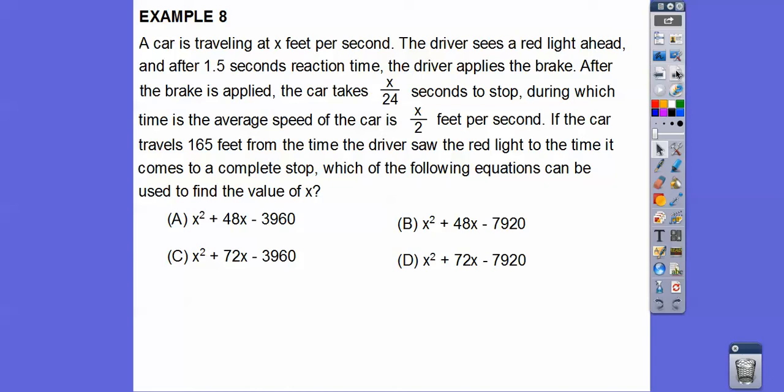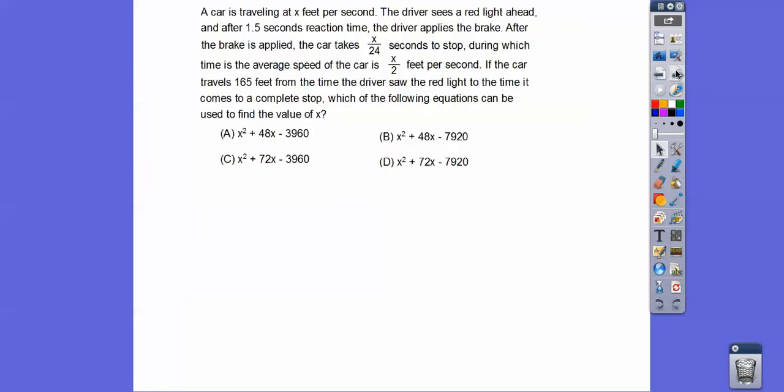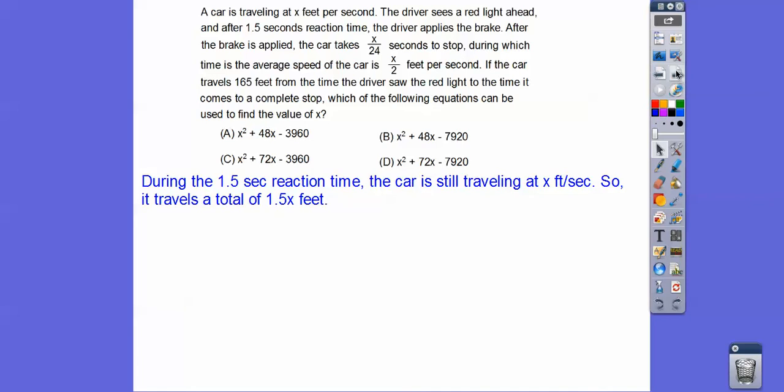Okay. All right. The car is traveling at x feet per second. The driver sees a red light. And after 1.5 seconds reaction time, he finally applies or she finally applies the brake. So after the brake is applied, the car takes x over 24 seconds to stop, during which time the average speed of the car is x over 2 feet per second. So a lot of stuff there. If the car travels 165 feet from the time the driver saw the red light to the time it comes to a complete stop, which of the following equations can be used? All right. I just shrunk that up right there. So first of all, during that 1.5 seconds reaction time, the car is still traveling at x feet per second. So remember, distance equals rate times time. So the distance is going to be the 1.5 times the rate right there. So the rate times time, so 1.5x.